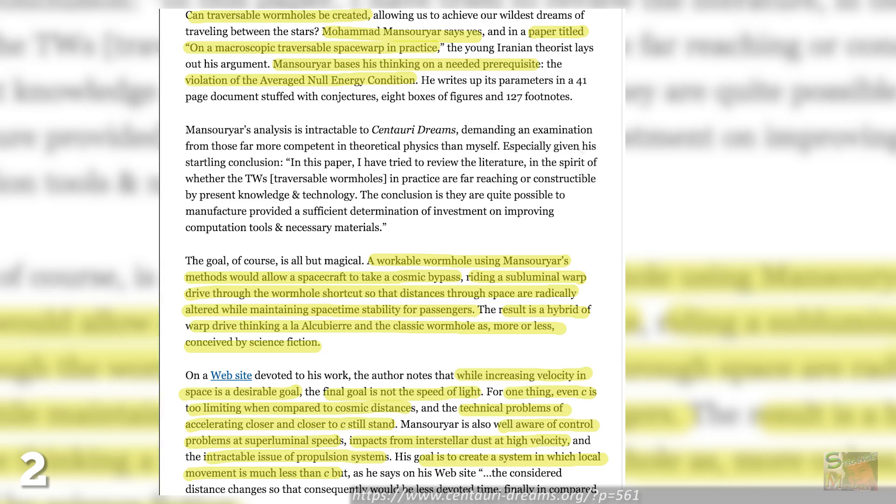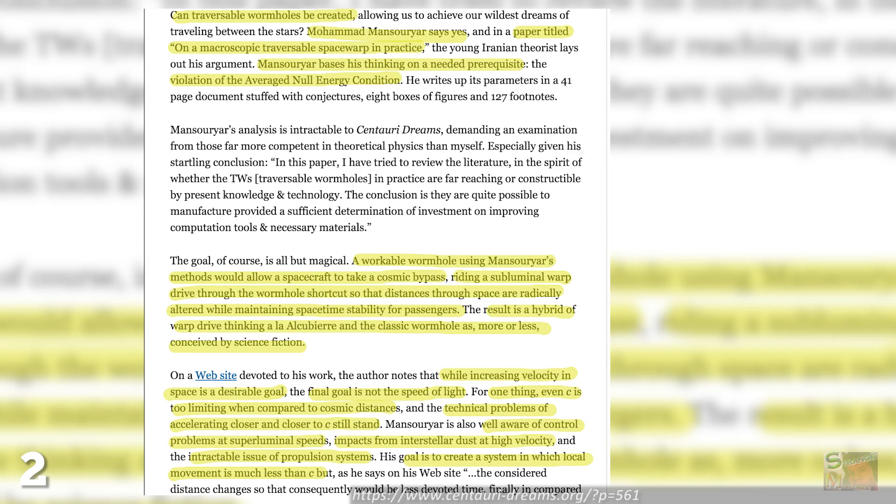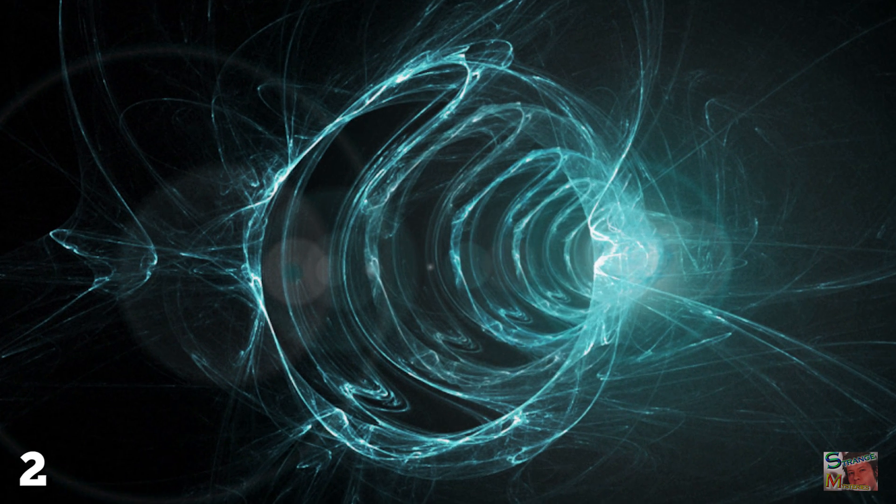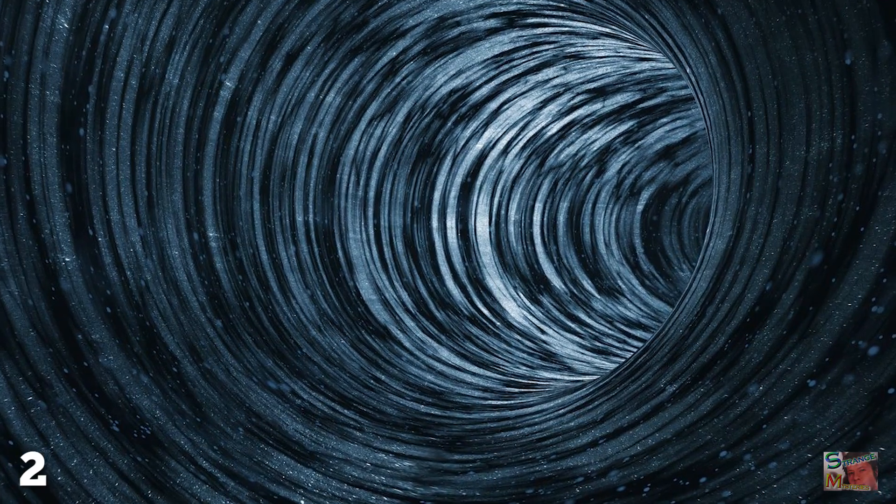His theoretical wormhole would exist on the Planck scale at first, which is the smallest level that physics currently recognizes. However, after building one tiny wormhole, he believes we could build a ring of several of them, with the space in between collapsing and forming a larger opening. This wormhole would be large enough to see with the naked eye, but nowhere near big enough to stick your tongue through, if you're so inclined.